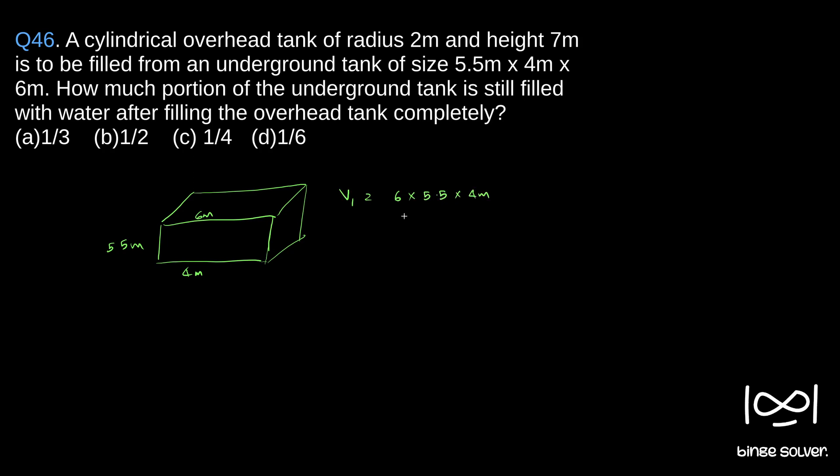4 meters. This is volume 1. And then we have an overhead tank in the shape of a cylinder. The radius is 2 meters and the height is 7 meters. So what is